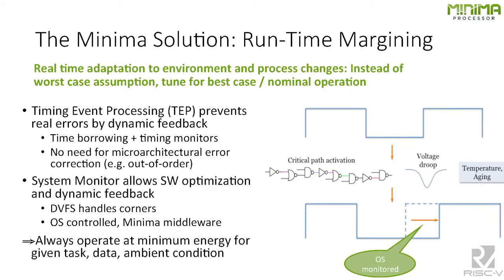What Minima proposes — and what we've been proposing on the academic side for a while — is to apply margin adaptively. You design for nominal, for whatever point you're targeting at that corner. When you hit your critical paths — whether from voltage droop or slow effects like temperature and aging — you give the circuit more time to finish, effectively moving the clock edge.